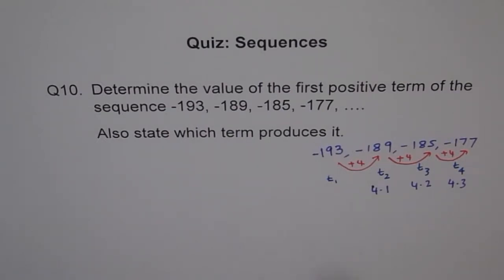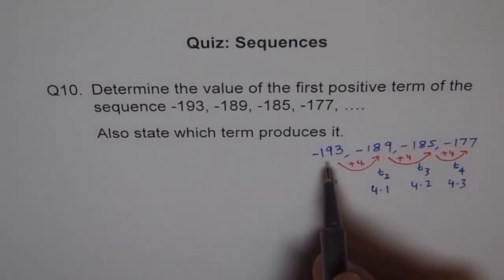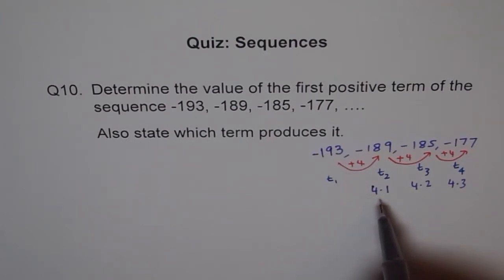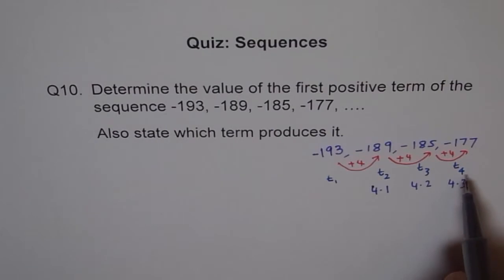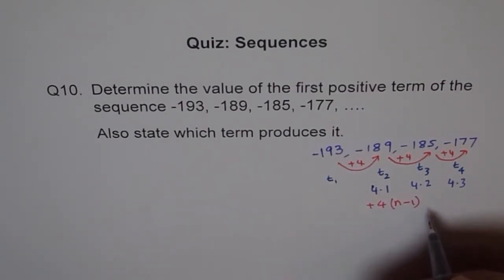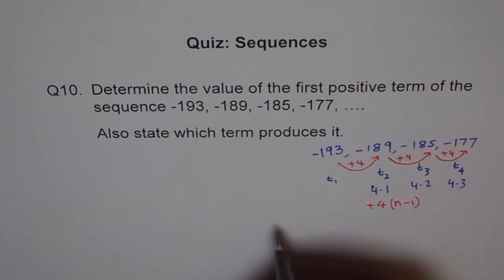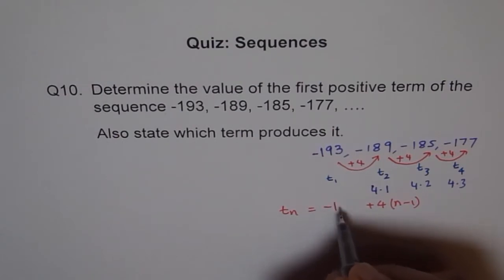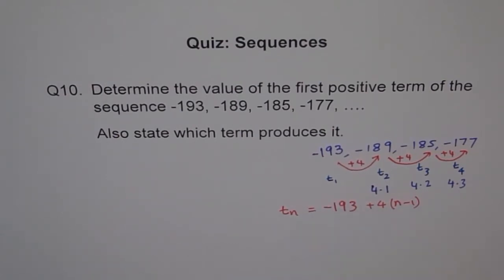So from here, you can see that starting with this number minus 193, you have to add 4 how many times? N minus 1 times. This is T2, you are adding it 1 time, T3, 2 times, T4, 3 times. So in general, you can write this as add 4, N minus 1 time, to get to TN. And start at minus 193. Does that make sense?